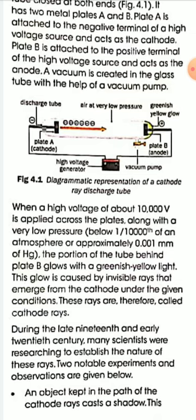This greenish-yellow glow is caused by invisible rays that emerge from the cathode under these conditions. When high voltage of about 10,000 volts is applied, invisible rays originate from the cathode and move towards the anode. These rays are therefore called cathode rays. When these cathode rays strike the glass just behind plate B (the anode), you see a greenish-yellow light.